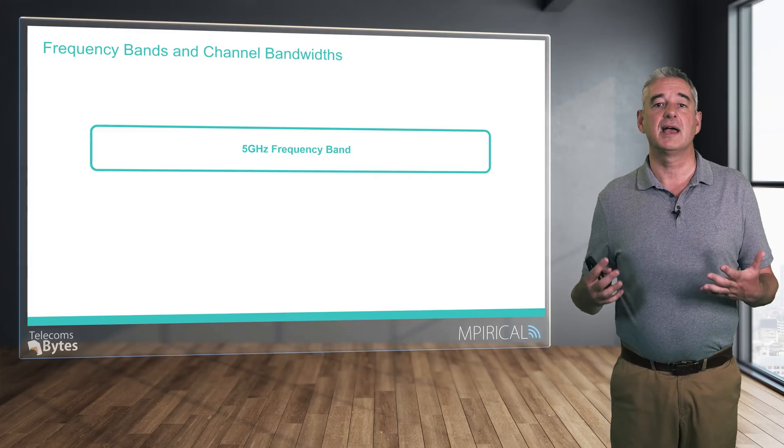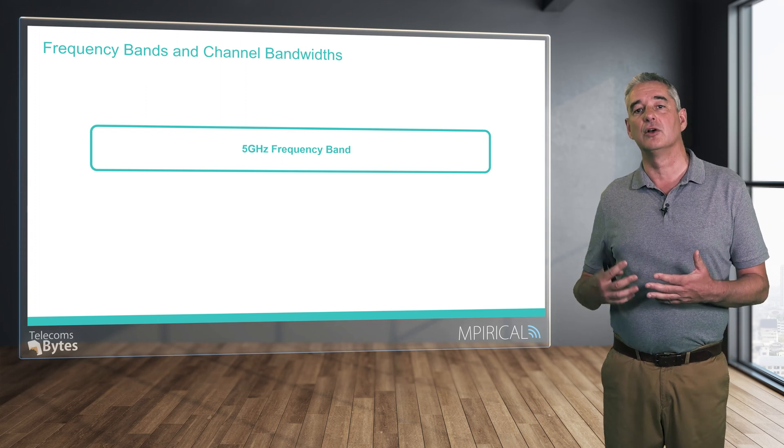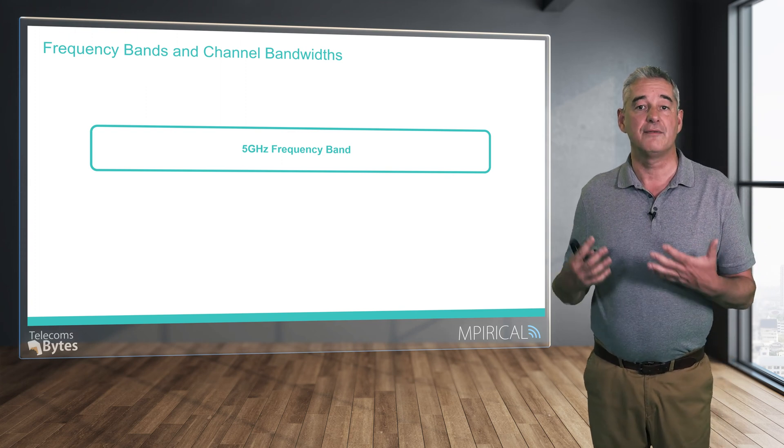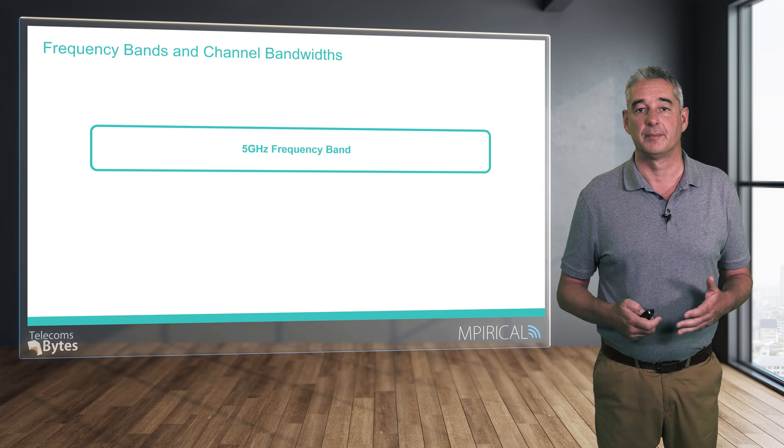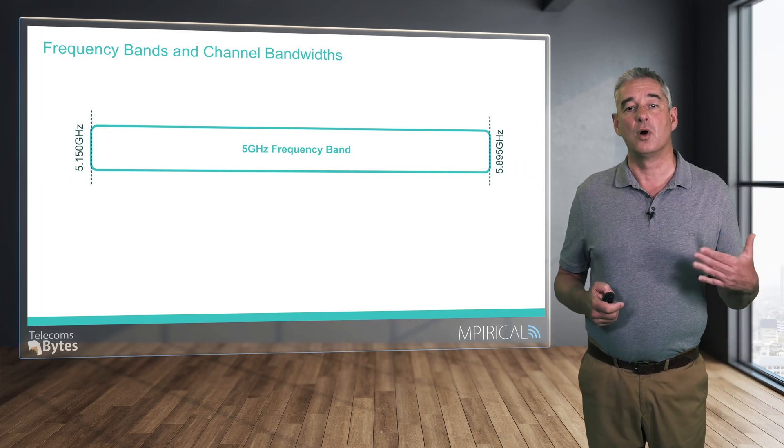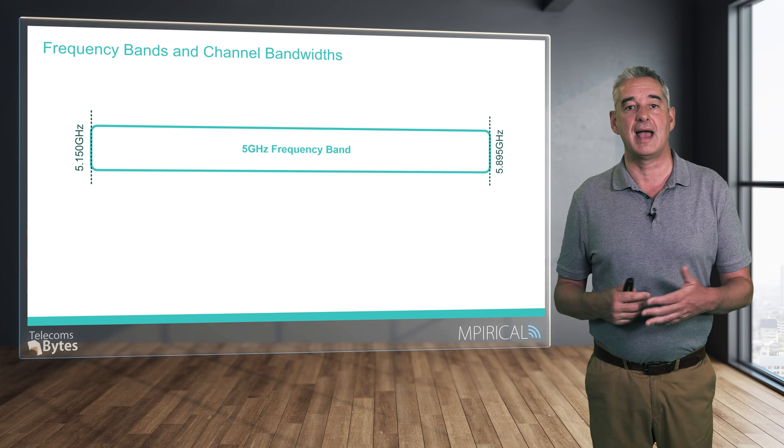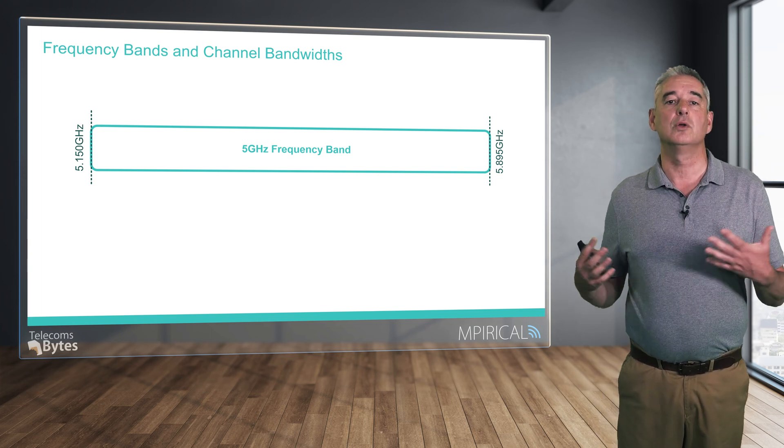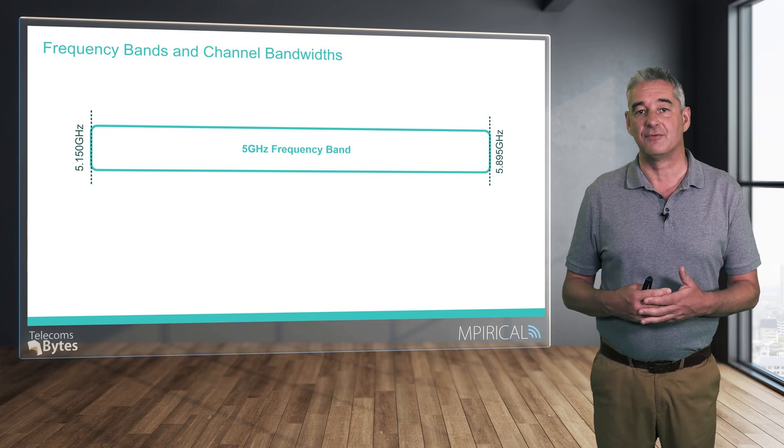For example, the diagram illustrates the 5 gigahertz frequency band that Wi-Fi networks are permitted to use. This ranges from 5.15 gigahertz at the lower end of the frequency band all the way up to 5.895 gigahertz.